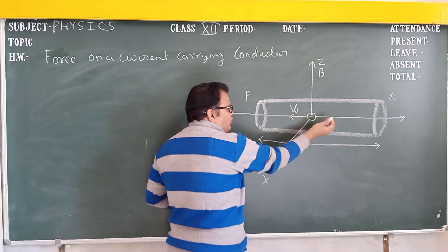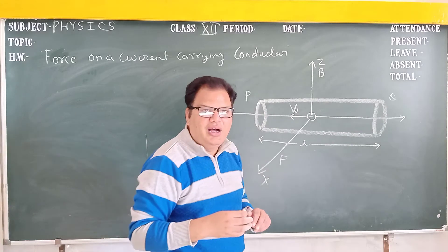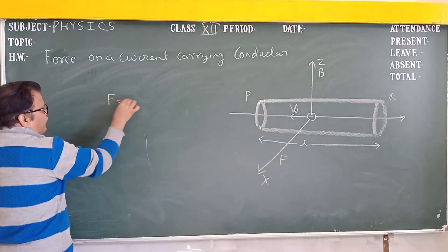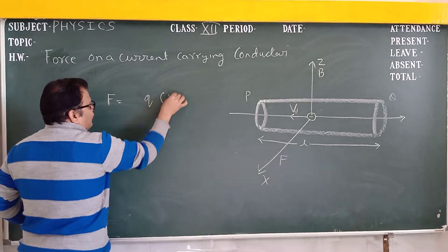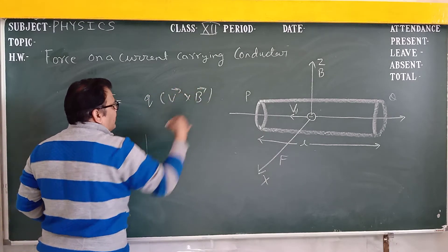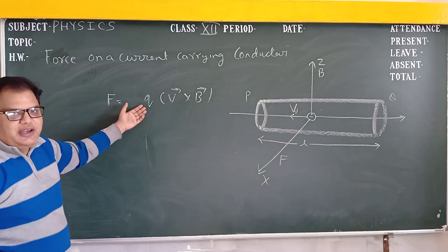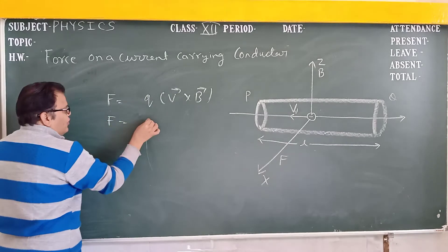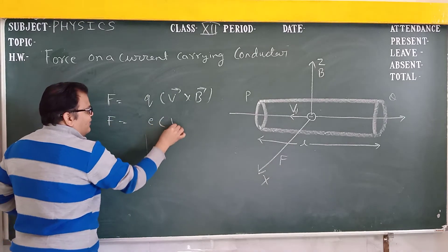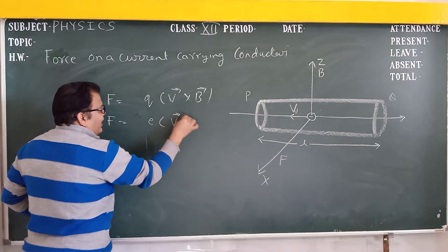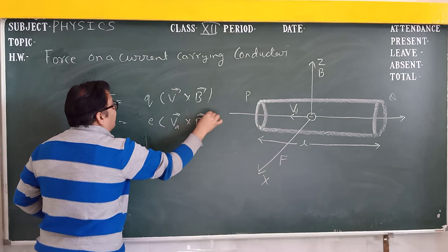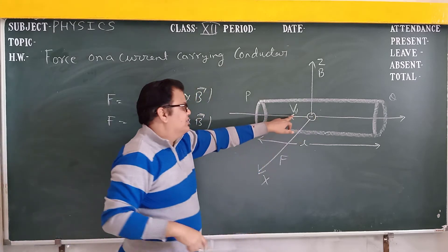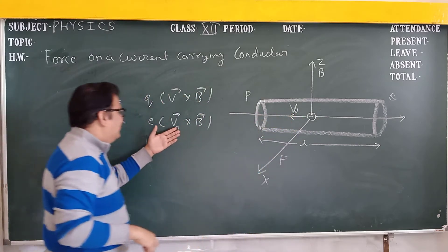Electrons always move in the opposite direction of current. So the force F — we know that force F is equal to QV cross B. For a charged particle, here the charge particle is the electron. So F equal to e times VD cross B, where VD is the drift velocity, because the electron is drifted. The charge of the electron is minus e.